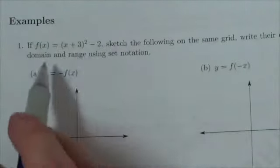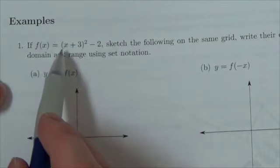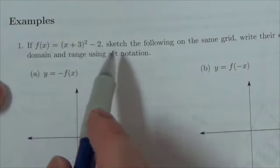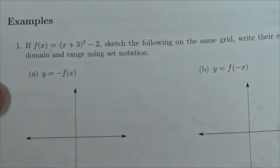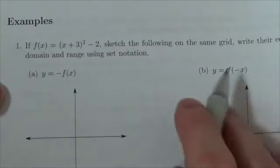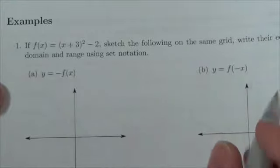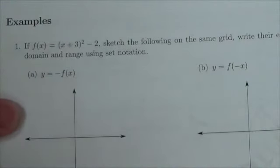What we're going to do here is take this graph, y equals x plus 3 squared minus 2, and we're going to sketch the following transformations, write the new equation, and state the domain and range using set notation.